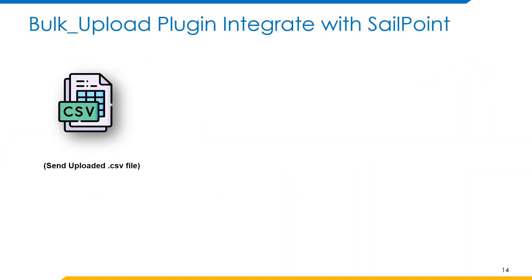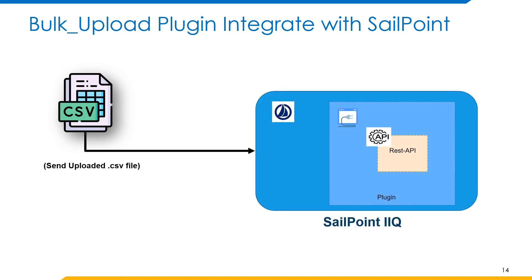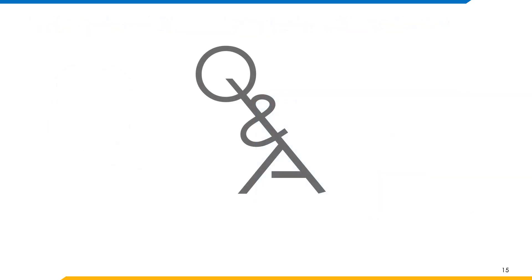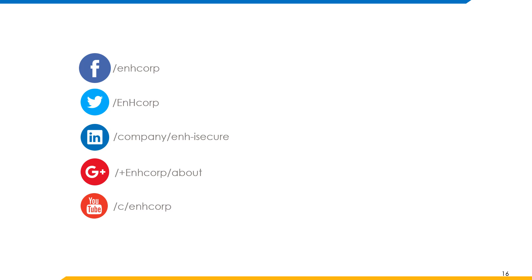The integration through SailPoint is simple: the CSV file is uploaded via the plugin UI using a REST API. The REST API receives the file and it is sent to SailPoint. According to the approval, the identity creation takes place. If you have any questions, please comment below. Please subscribe to ENH Tutorial for further technical updates. Thank you.